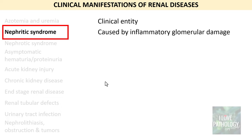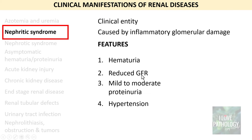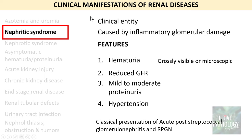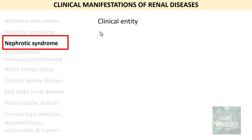Moving on to nephritic syndrome — it is a clinical entity caused by inflammatory glomerular damage. It is a glomerular disease and the features include hematuria, reduced glomerular filtration rate, mild to moderate proteinuria, and hypertension. Hematuria can be grossly visible or microscopic; on urine analysis you can find RBCs in urine along with some casts. Nephritic syndrome is a clinical representation of acute post-streptococcal glomerulonephritis and rapidly progressive glomerulonephritis.